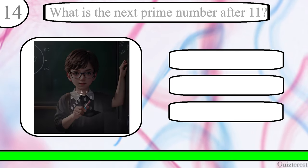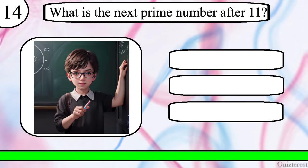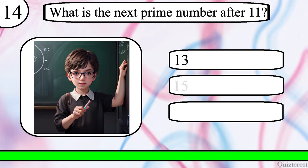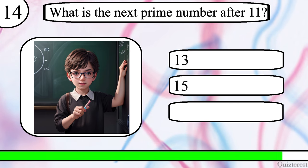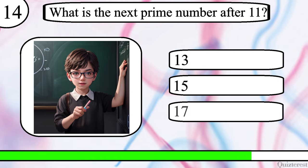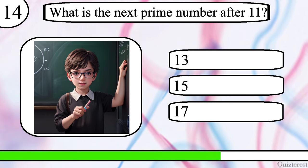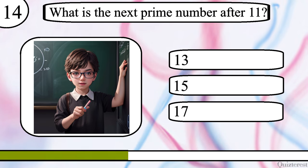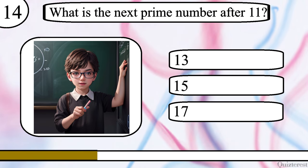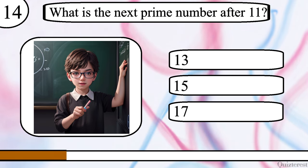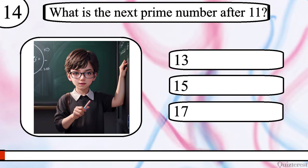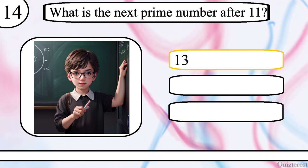Question 14. What is the next prime number after 11? 13, 15 or 17? The correct answer is 13.